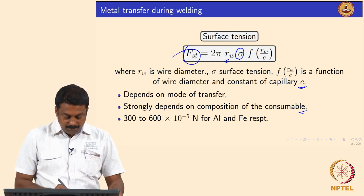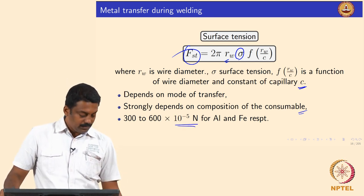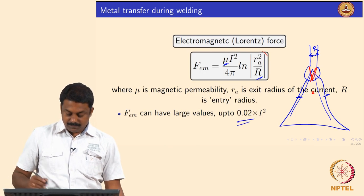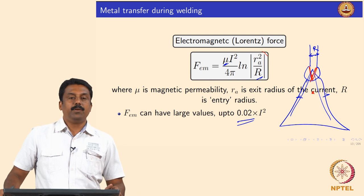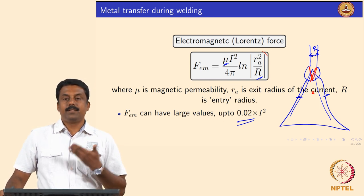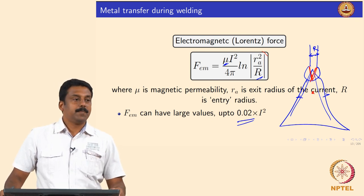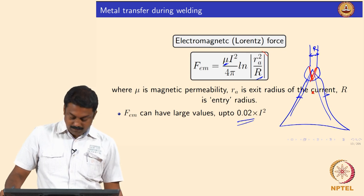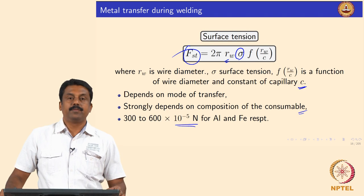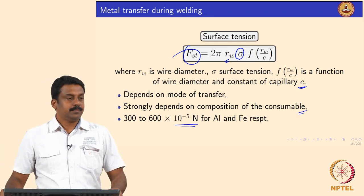Looking at all the values, they are similar except the Lorentz force. The Lorentz force value is approximately 0.02 × I², so when current is increased the Lorentz force increases exponentially — whereas the other forces remain on the order of 10⁻⁵ Newton. This makes the Lorentz force the dominant assisting force at higher currents.